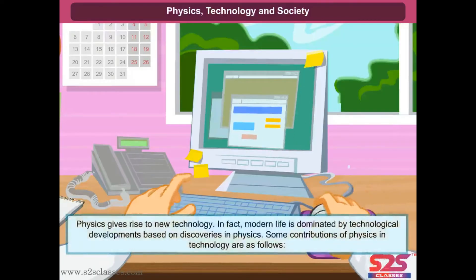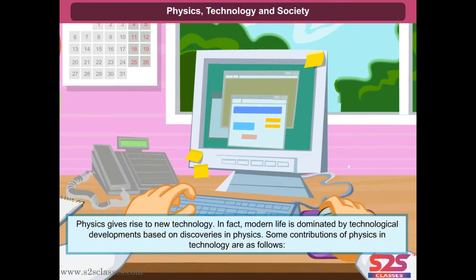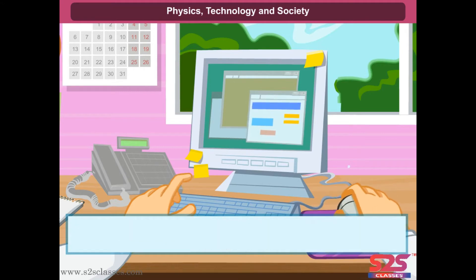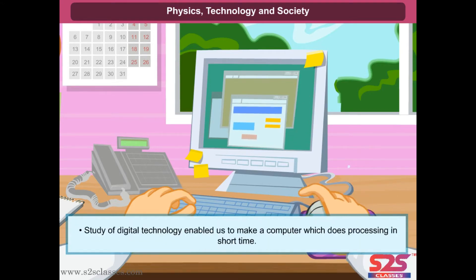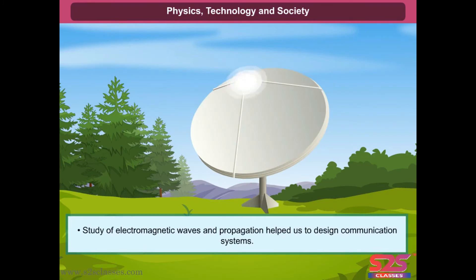Physics, technology and society. The technology of physics. Physics gives rise to new technology. In fact, modern life is dominated by the technological developments based on discoveries in physics. Some contributions of physics and technology are as follows: study of digital technology enabled us to make computers which do processing in short time; development of cyclic reversible process by Carnot enabled us to realize engines, refrigerators, air conditioners, etc.; study of electromagnetic waves and propagation helped us to design communication systems.